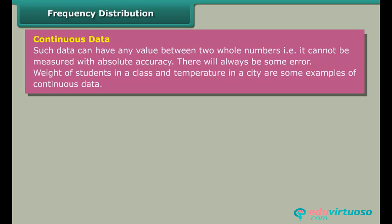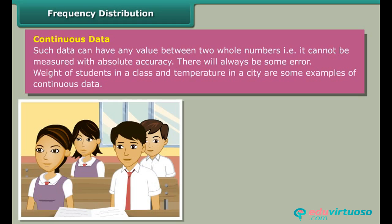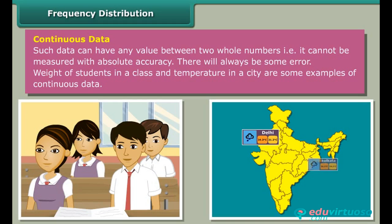Continuous data: Such data can have any value between two whole numbers; that is, it can be measured with absolute accuracy, though there will always be some error. Weight of students in a class and temperature in a city are some examples of continuous data.